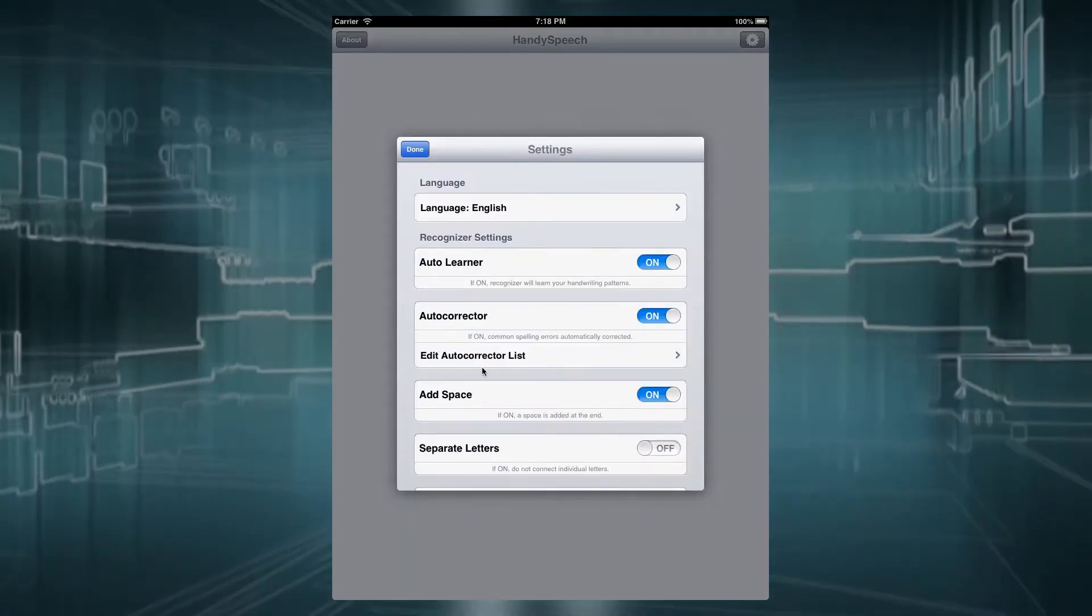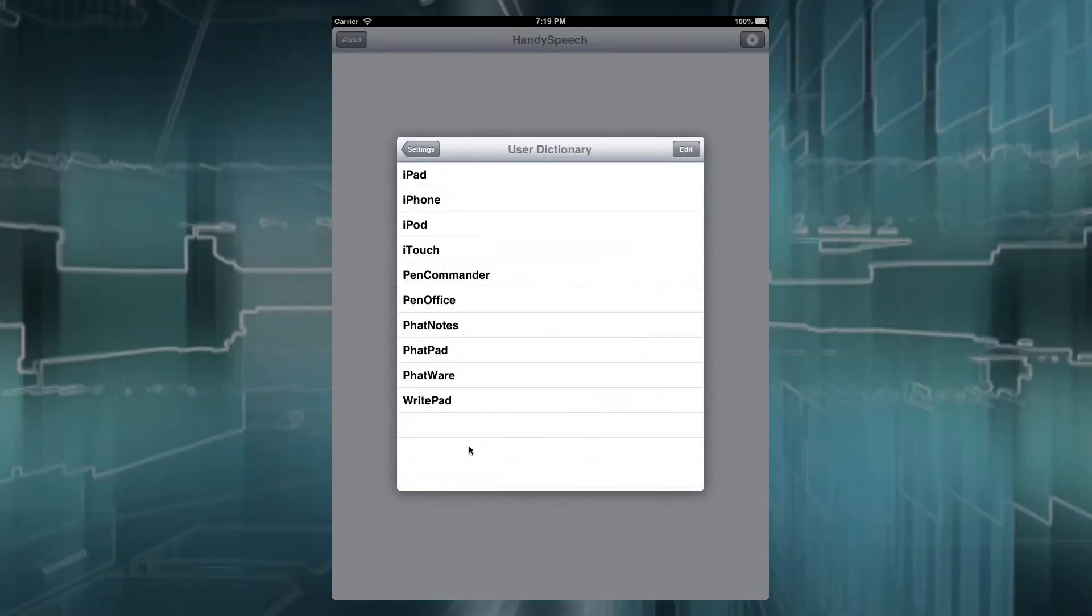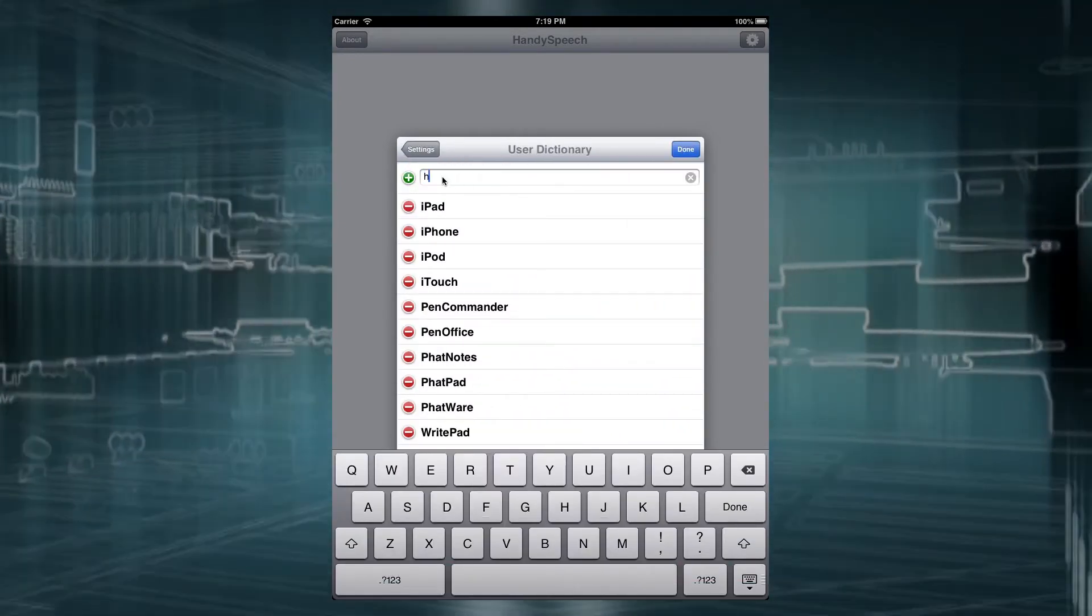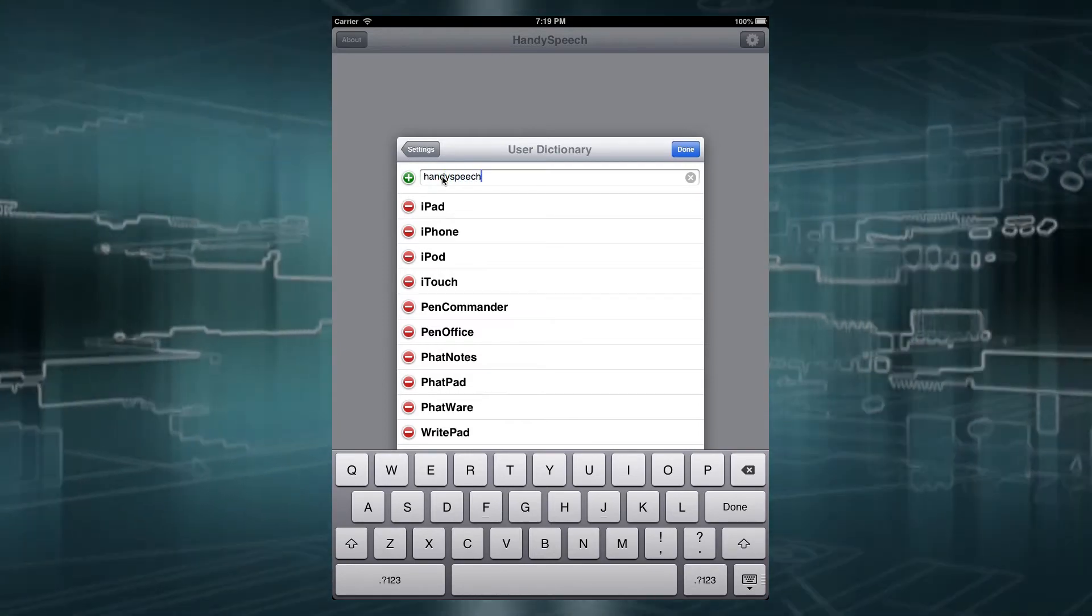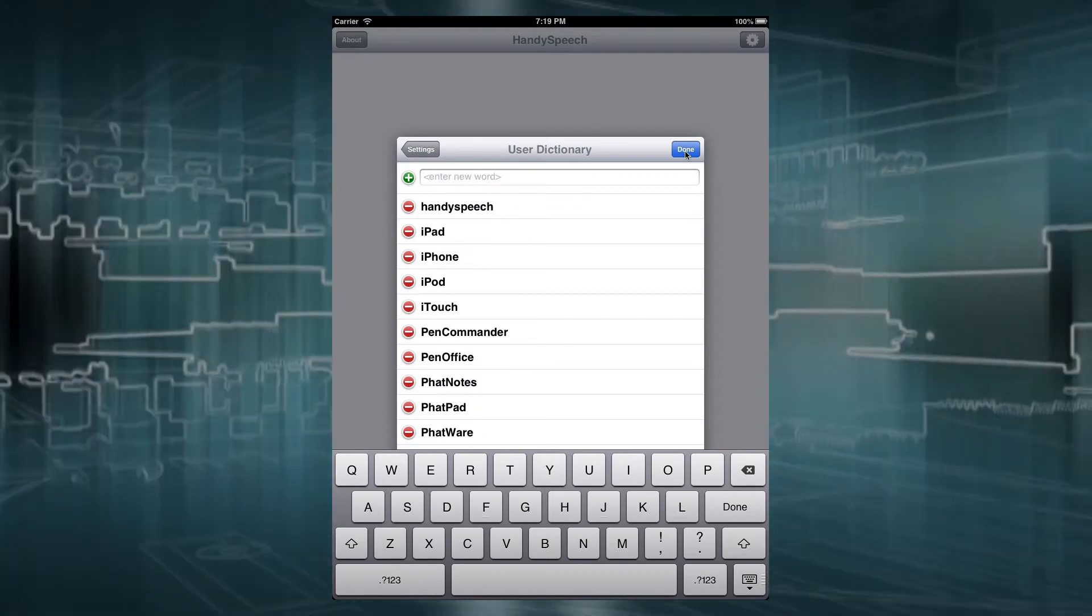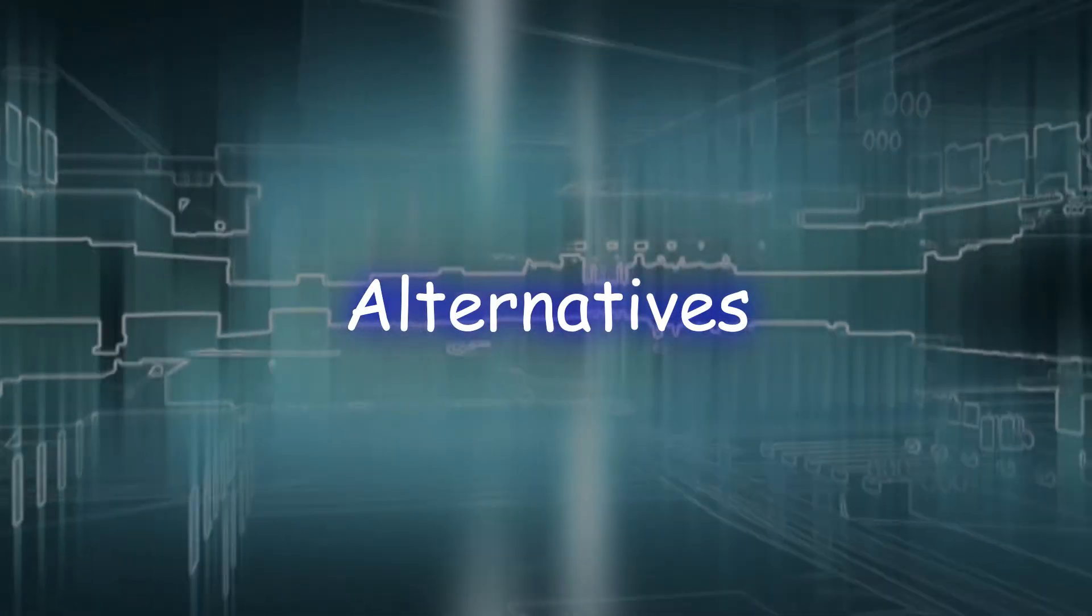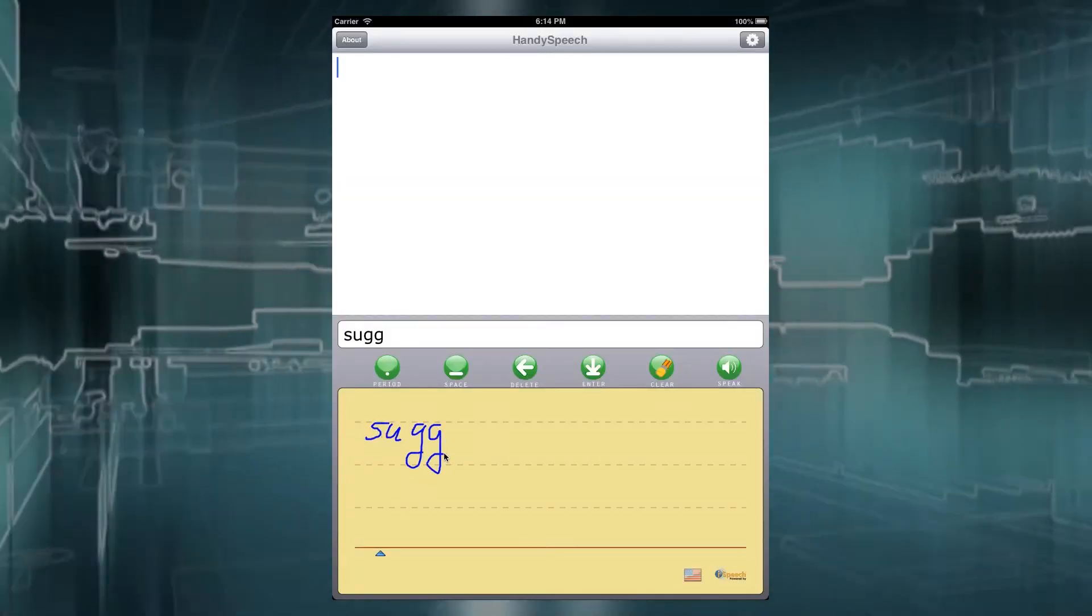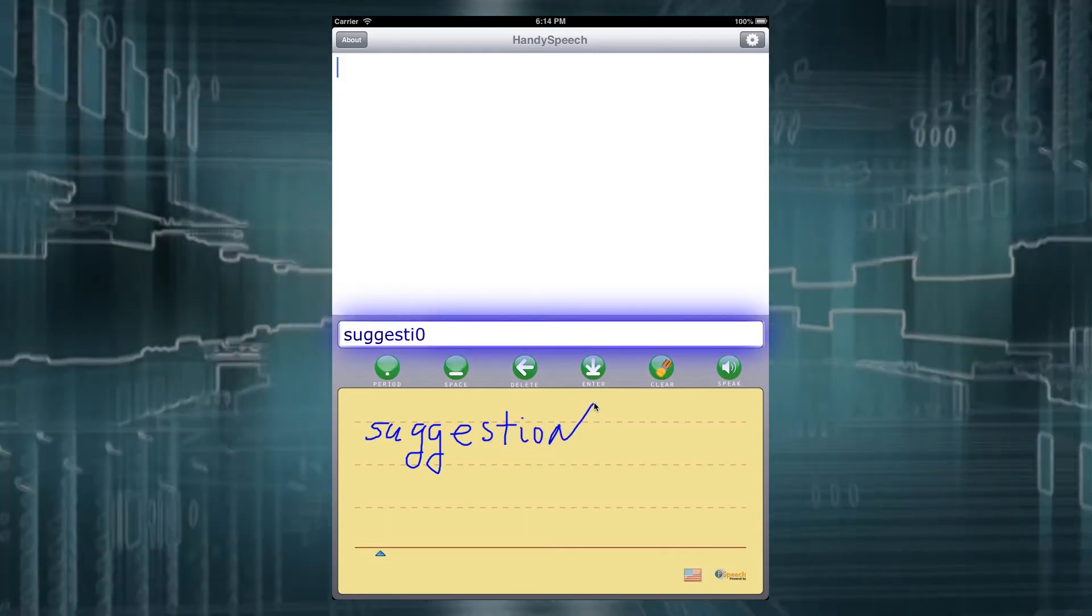If you use words that are not in the main or user dictionary, such as rare names, we recommend adding these words to the user dictionary. If the Recognizer returns an unexpected result, touch the incorrectly recognized word in the Recognition Results window to view alternatives.